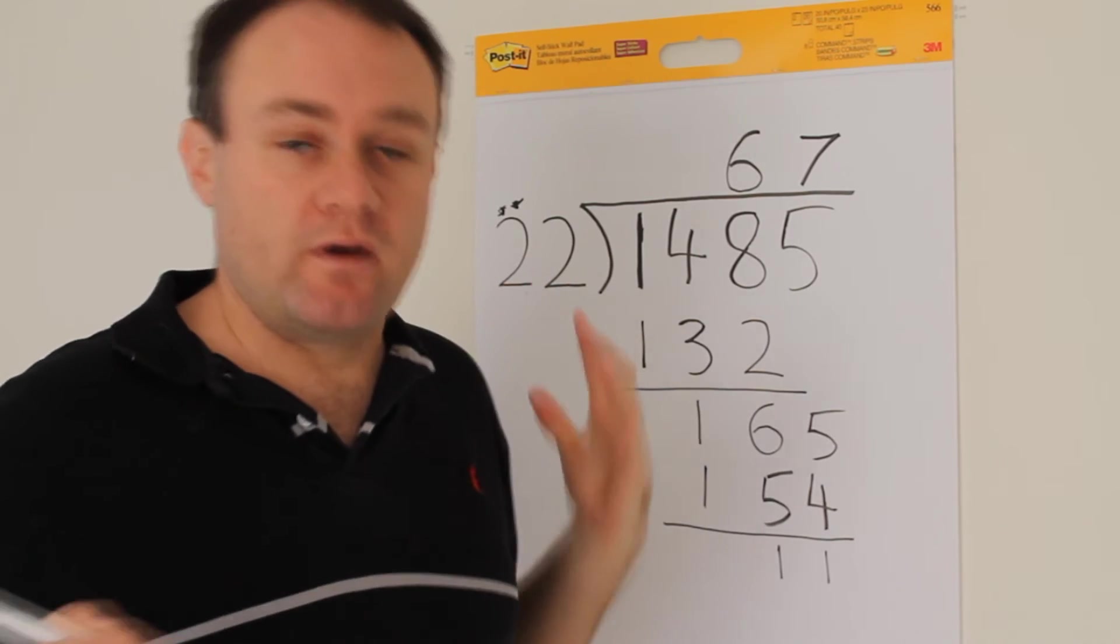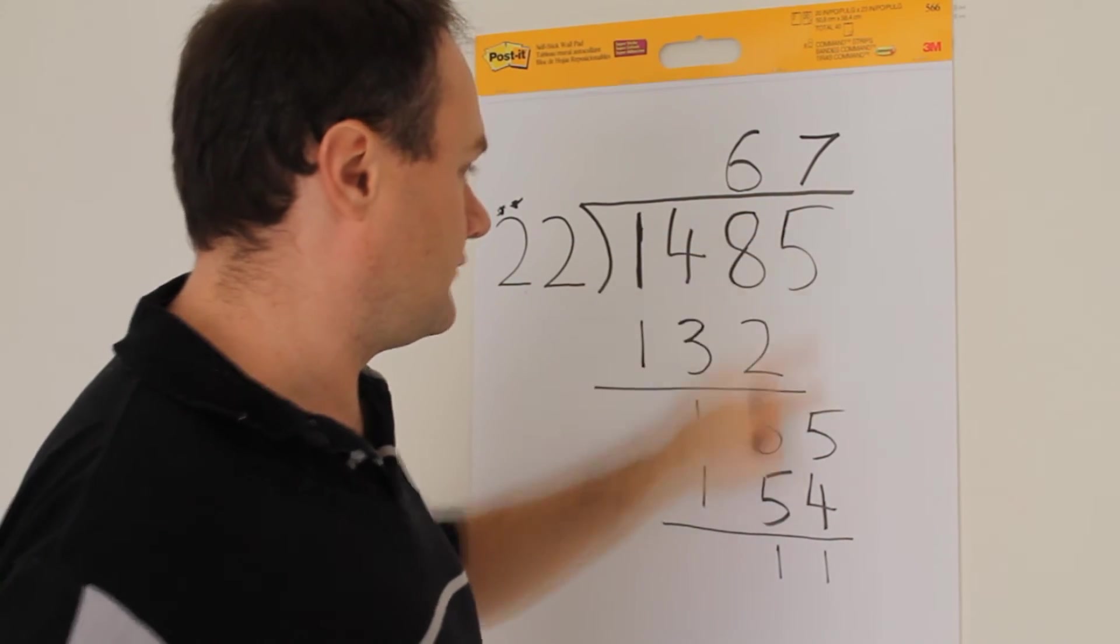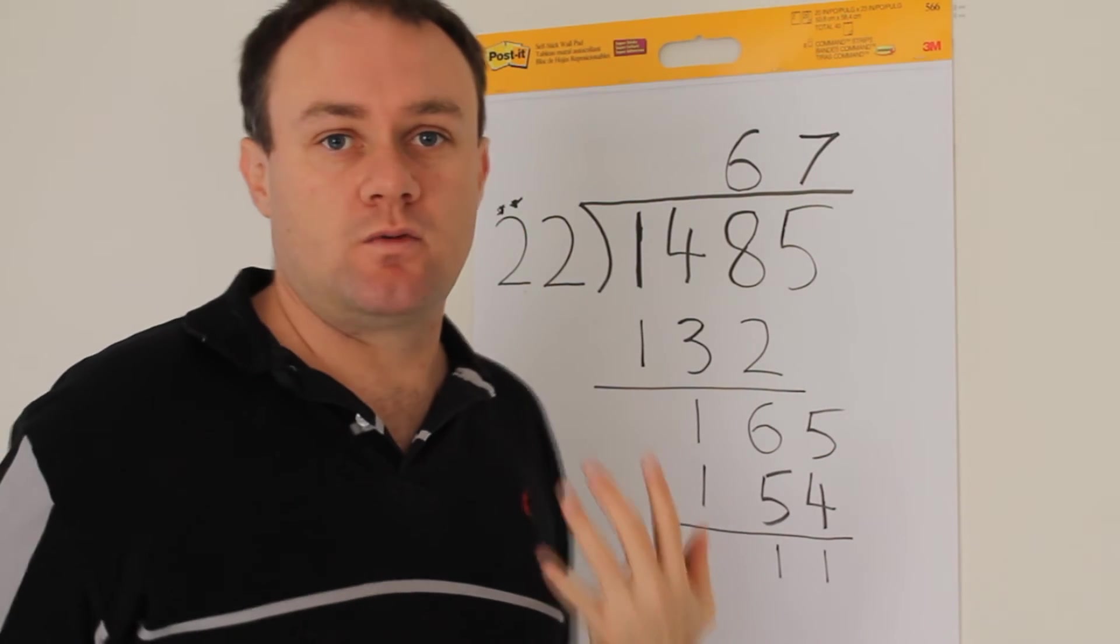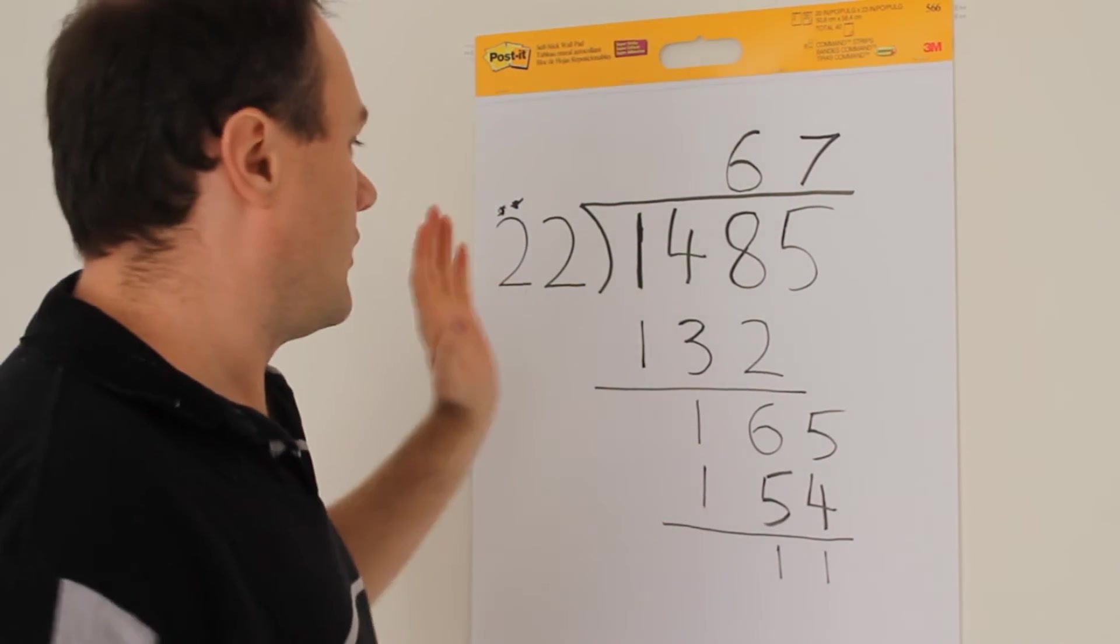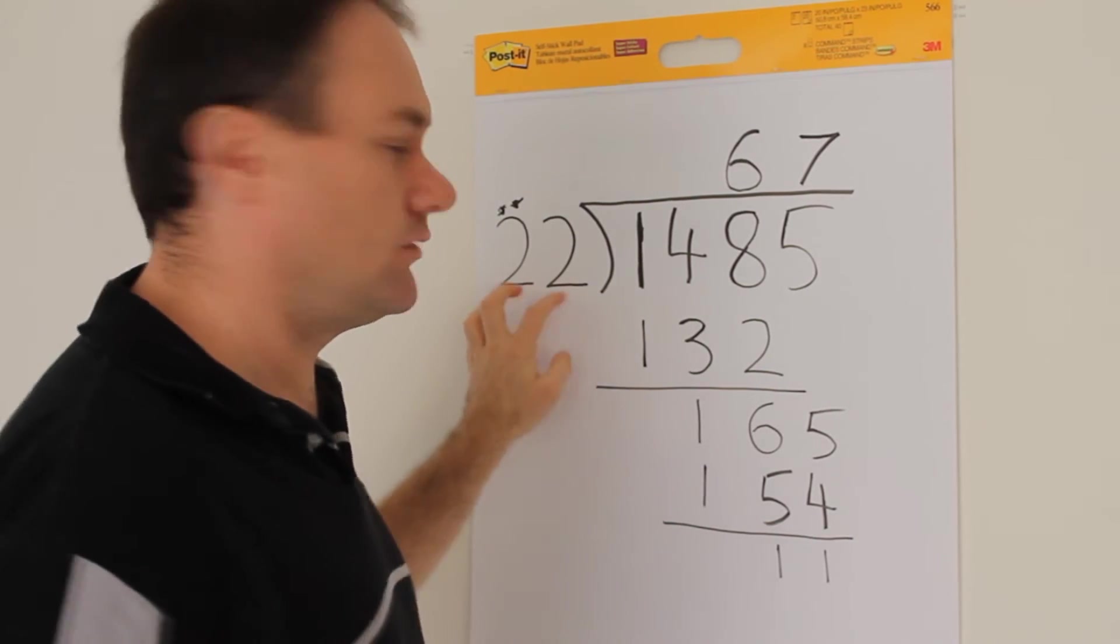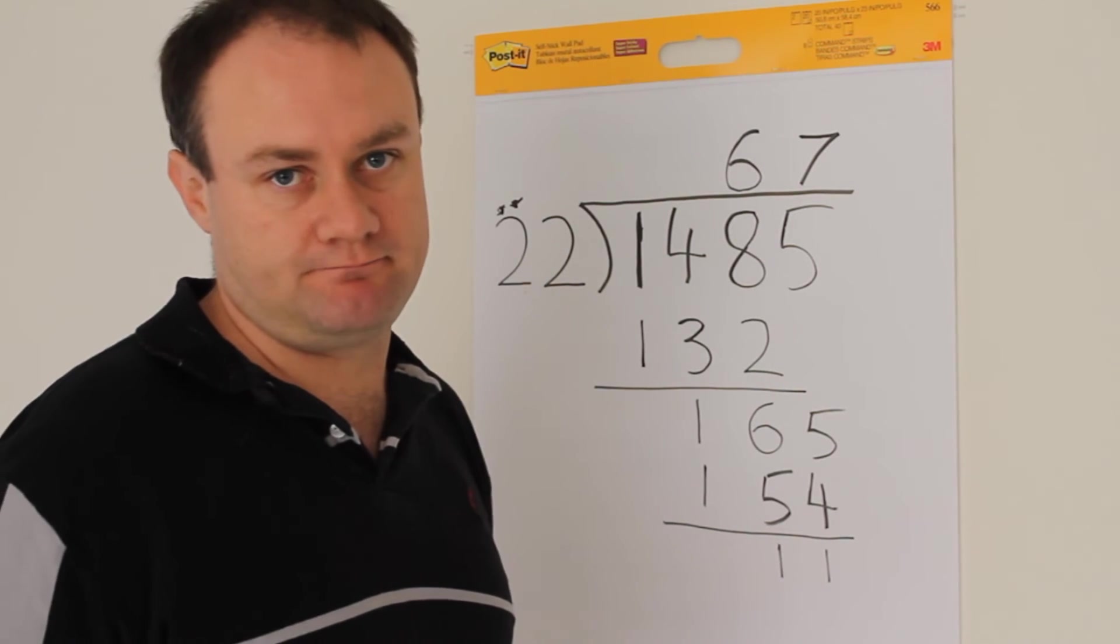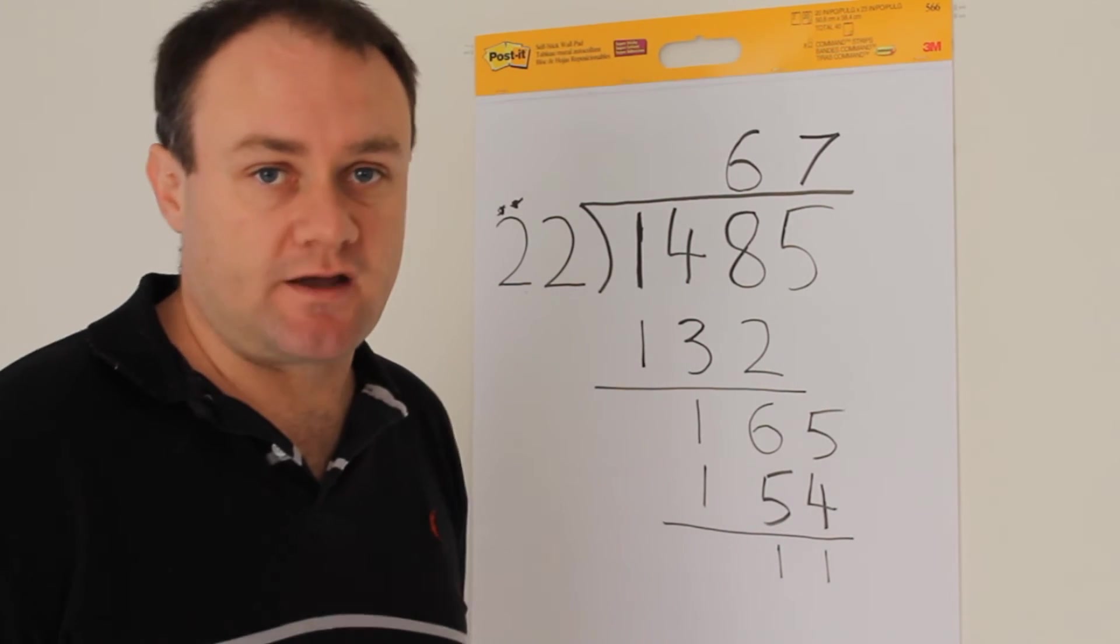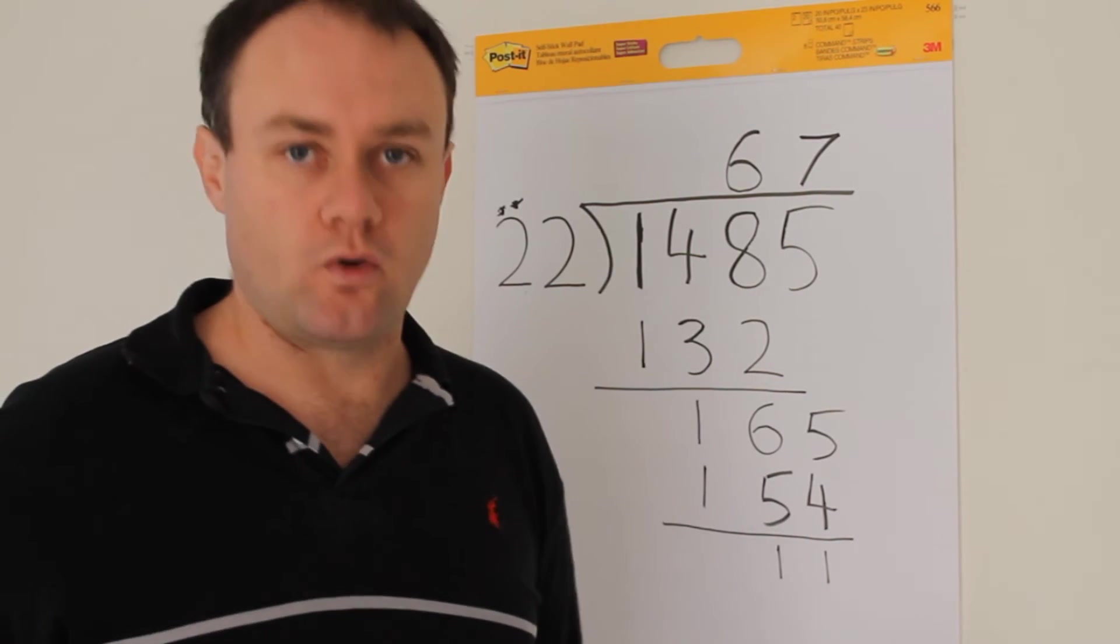And that's it. We're finished really because we've used up all of these numbers here. We've pulled down the 5, so we've done it and we're going to be left with a remainder. 1,485 divided by 22 equals 67 with a remainder of 11. So you can leave it like that, or you can also convert the remainder to a fraction or a decimal.